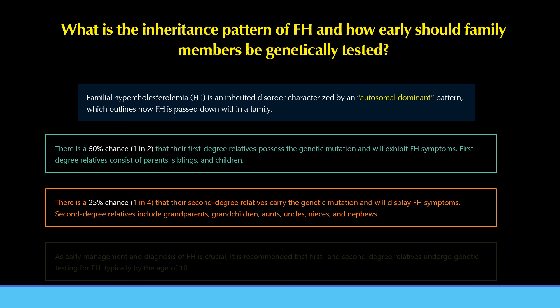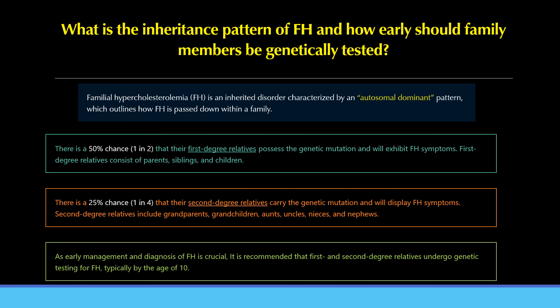There is a 25% chance — or 1 in 4 — that second-degree relatives carry the genetic mutation and display FH symptoms. Second-degree relatives include grandparents, grandchildren, aunts, uncles, nieces, and nephews. As early management and diagnosis of FH is crucial, it is recommended that first- and second-degree relatives undergo genetic testing for FH, typically by the age of 10.